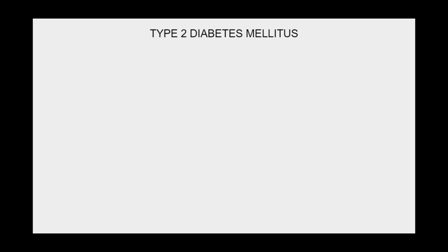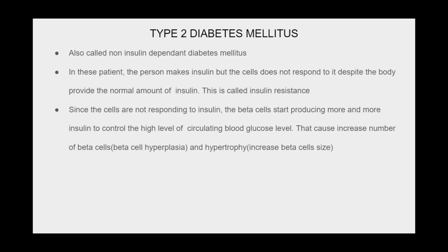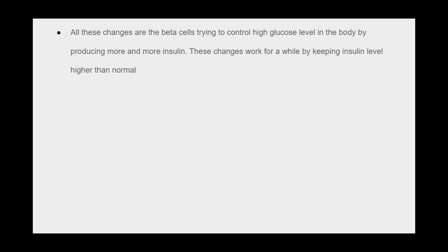Type 2 diabetes mellitus, also called non-insulin dependent diabetes mellitus, is a condition where the person produces insulin but the cells do not respond to it — this is called insulin resistance. Since cells are not responding to insulin, the beta cells start producing more and more insulin to control the high circulating blood glucose level, causing increased number of beta cells (beta cell hyperplasia) and increased beta cell size (hypertrophy). These changes keep insulin levels higher than normal for a period of time.